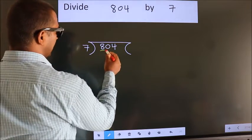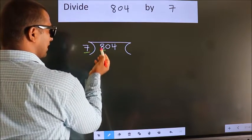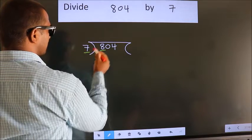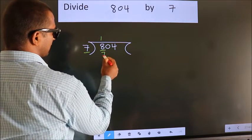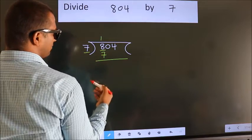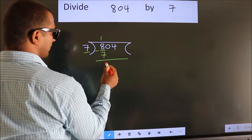Here we have 8. Here 7. A number close to 8 in 7 table is 7 once 7. Now we should subtract. We get 1.